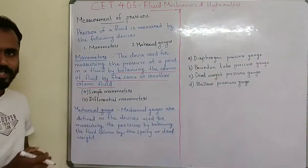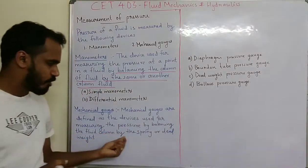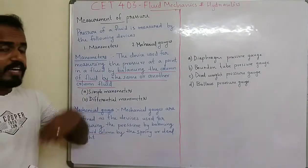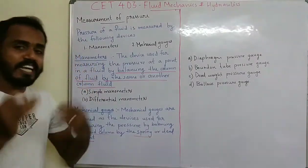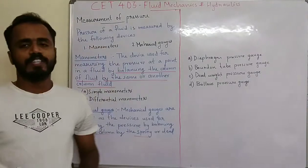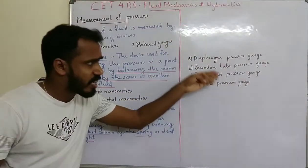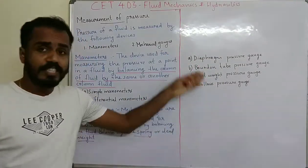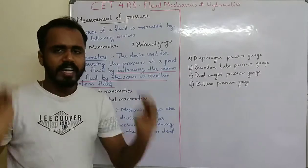The next type is mechanical gauges. Mechanical gauges are devices used for measuring the pressure by balancing the fluid column by a spring or dead weight. The classification of mechanical gauges includes diaphragm pressure gauges, Bourdon tube pressure gauges, dead weight pressure gauges, and bellows pressure gauges.